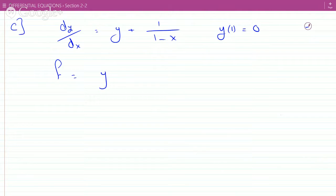So, f is y plus 1 over 1 minus x and df over dy is just the partial derivative with respect to y, which is 1. Is this continuous?